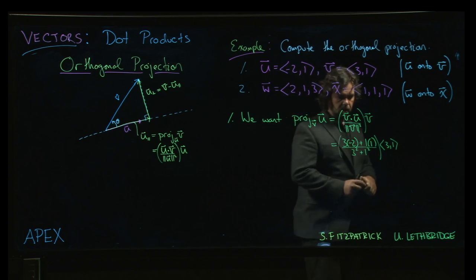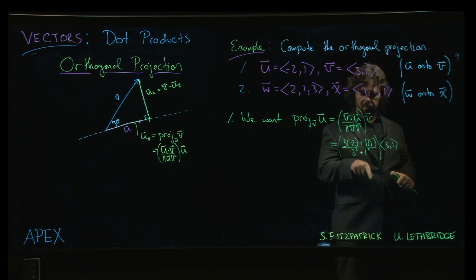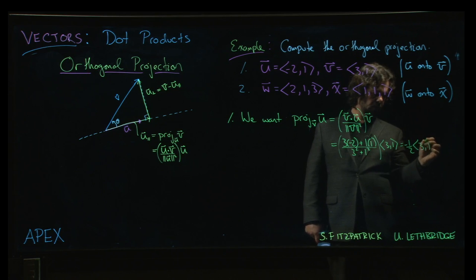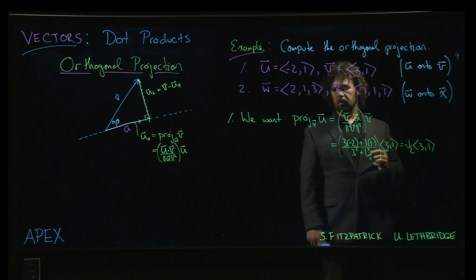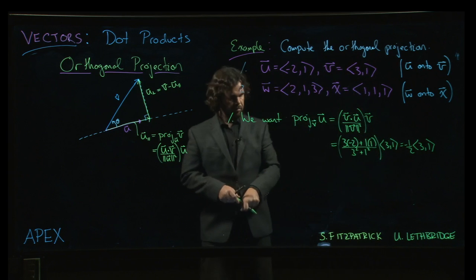Over the magnitude of v squared, so 3 squared plus 1 squared, times v, which is the vector 3, 1. So -6 plus 1, that's -5 on top, 10 on the bottom, so that works out to -1/2 of the vector 3, 1.